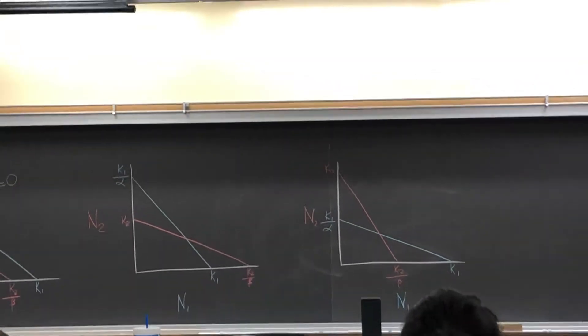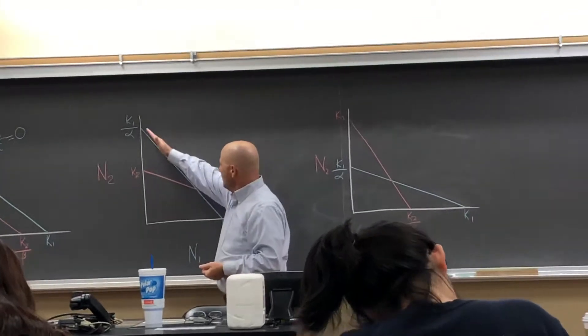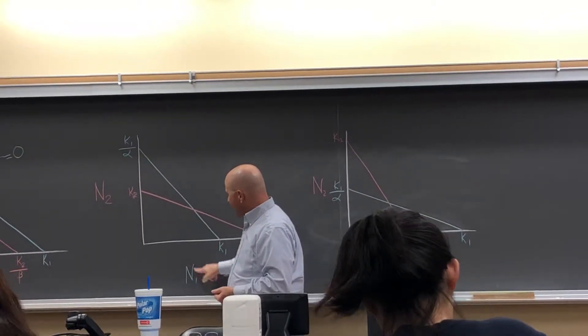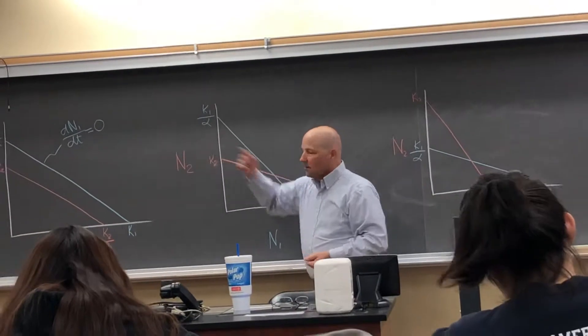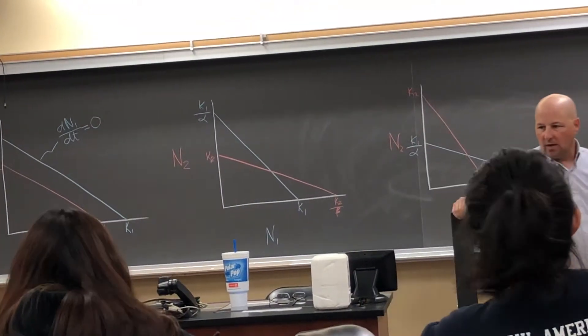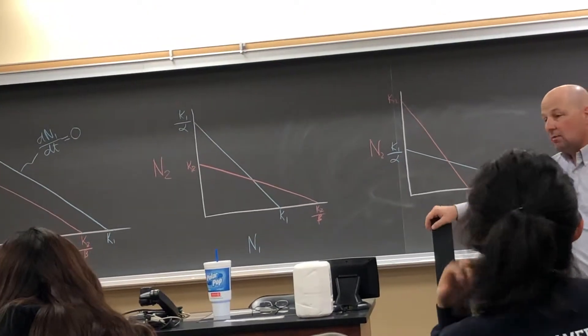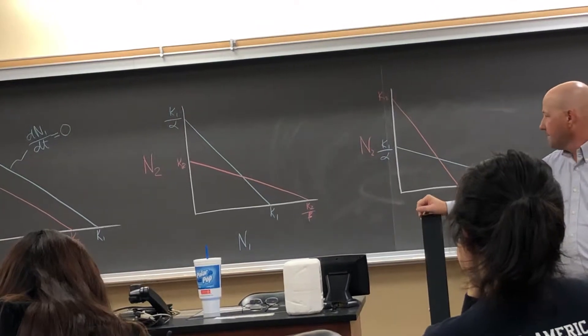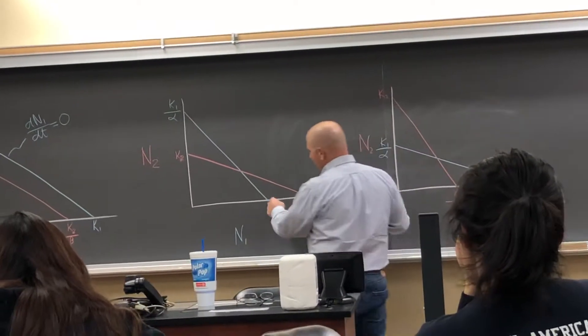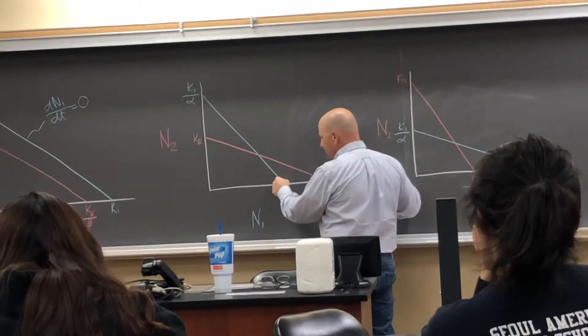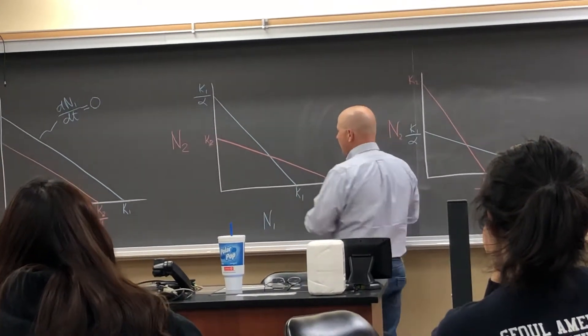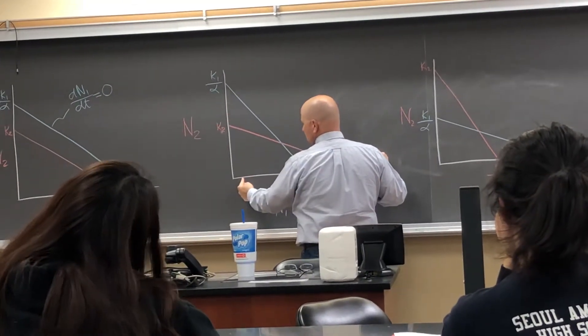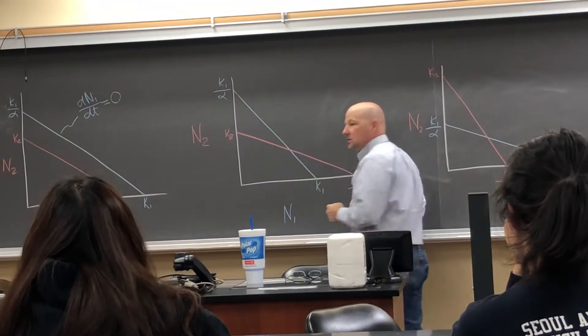All right, so thinking back to last week and what we just talked about, so this blue line here represents all the values or all the population sizes of species 1 and species 2 that combined would add up essentially to species 1 being at their carrying capacity and the population not growing. So in other words, if there are lots of individuals in species 1, so we're clear up here, it doesn't take very many individuals with species 2 to essentially stop them from growing. If there are very few individuals of population 1, it takes a whole bunch of species 2 to get them to stop growing.